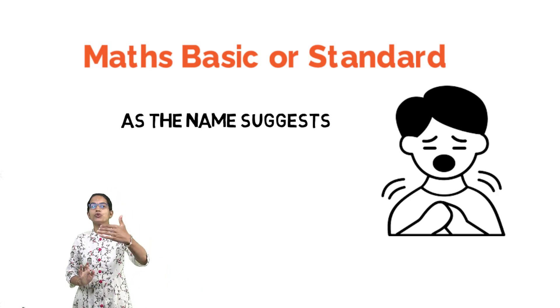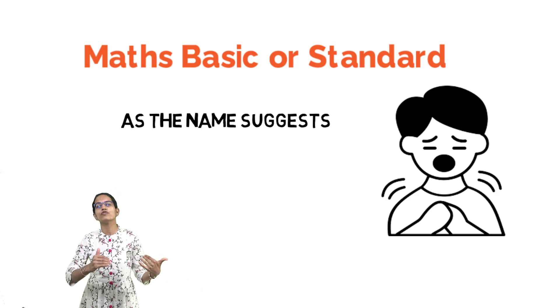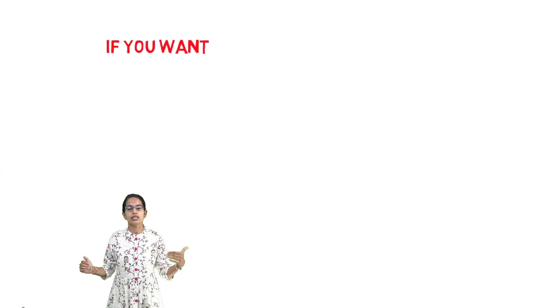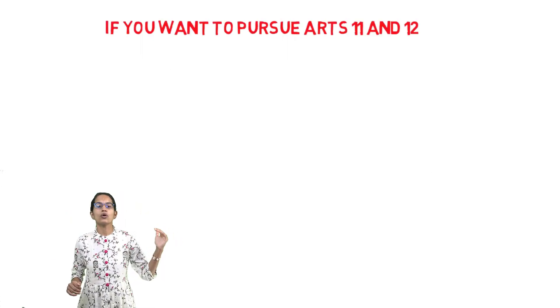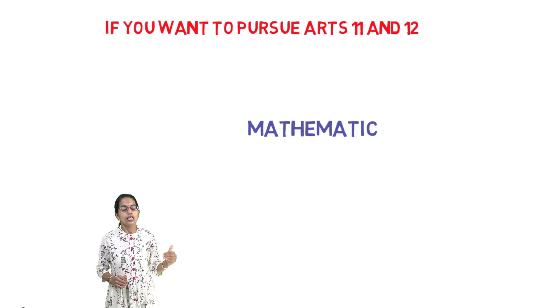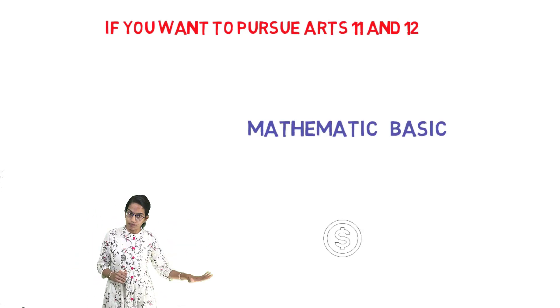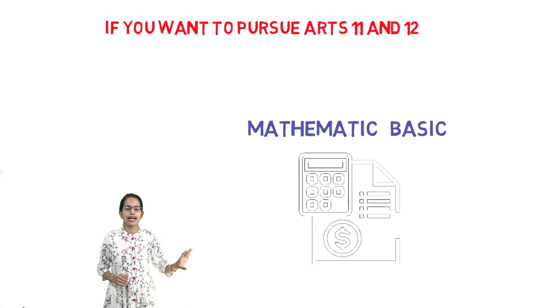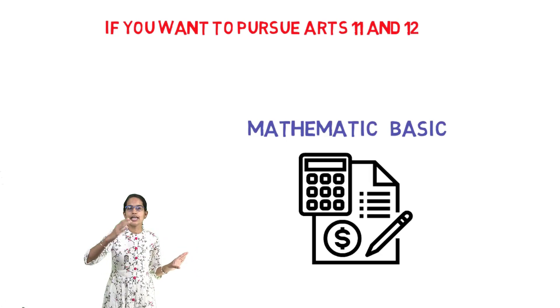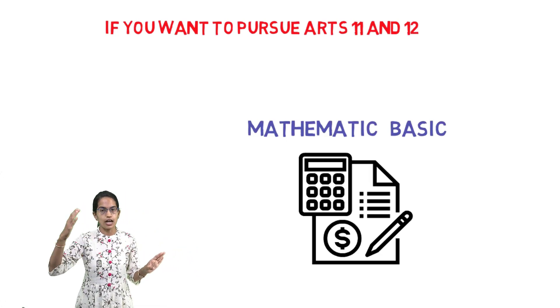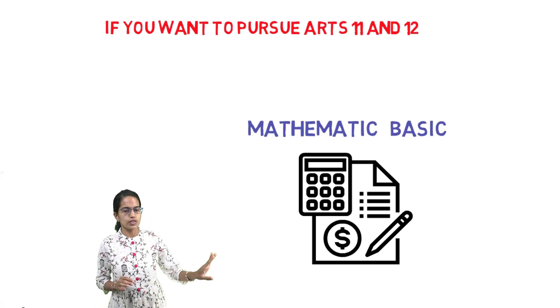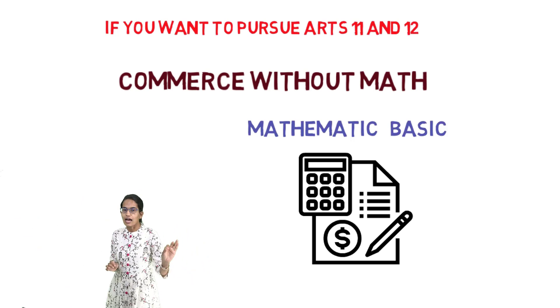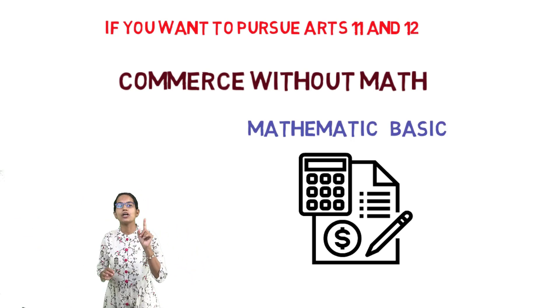Who would choose Mathematics Basic and who would choose Mathematics Advanced? If you want to pursue arts in 11th and 12th, you can go for Mathematics Basic. If you want commerce without mathematics—meaning you are not inclined towards CA, CS (Chartered Accountant, Company Secretary)—then you can take commerce without maths in 11th and 12th with Mathematics Basic.